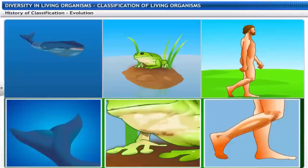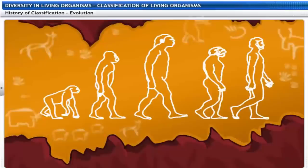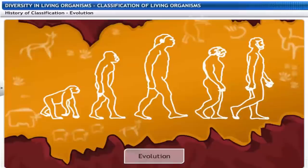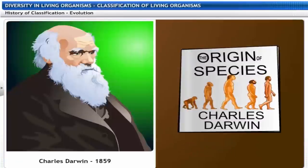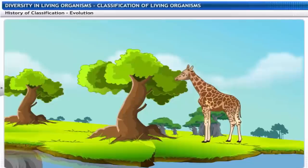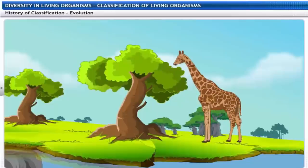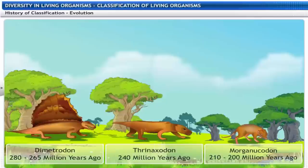All living things are classified on the basis of their form and function. But forms and functions evolve with time. Evolution is the change in inherited traits from one generation to the next. It was Charles Darwin who put forward the idea of evolution in 1859 in his book The Origin of Species. Most life forms that we see today have evolved to survive better, and hence classification of life forms is closely related to their evolution.